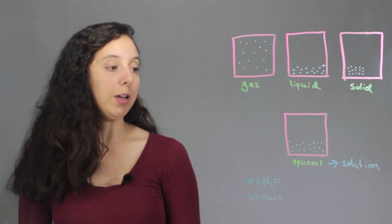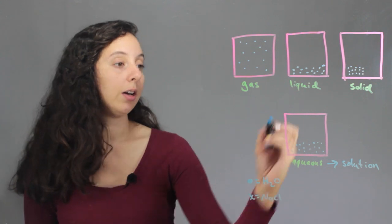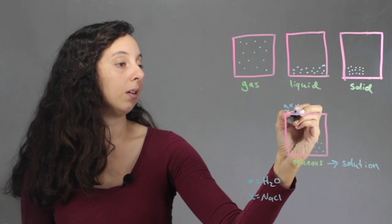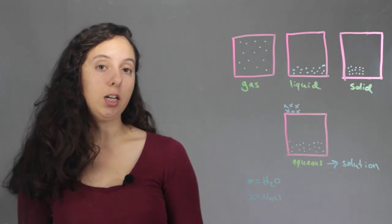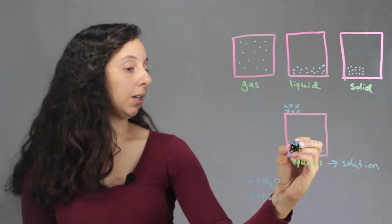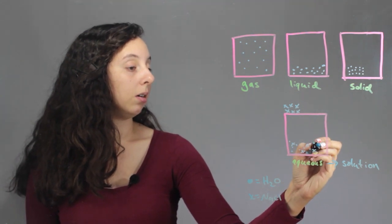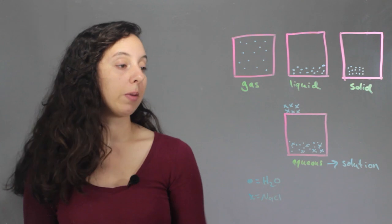So if we put sodium chloride in here, when we add it, it'll be a solid, so in a nice little grid like this. But once it gets in here, it's going to dissolve, and it's going to disperse throughout the water, forming a solution.